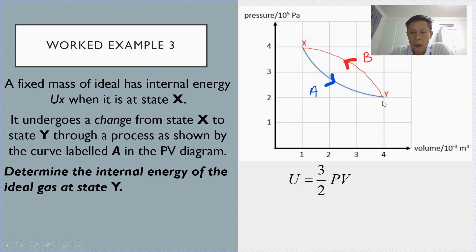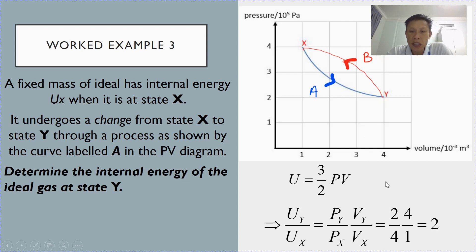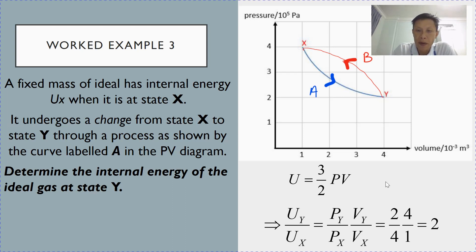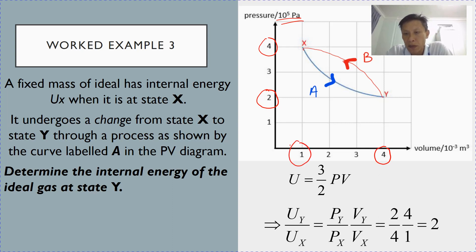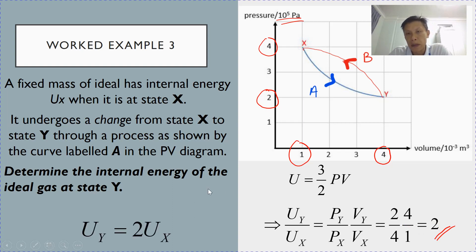So using the figures in the graph, since internal energy is directly proportional to pressure and also directly proportional to volume, the ratio uy over ux must be equal to (py over px) times (vy over vx). Looking at the graph carefully, the pressure at y is 2 and the pressure at x is 4. So the fraction is 2 over 4. The volume of y is 4 and the volume of x is 1, so the ratio is 4 over 1. Together, these two ratios give you 2. Therefore, the internal energy of y is double that of the internal energy of x.